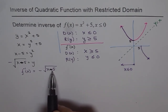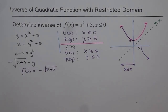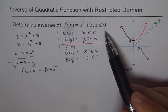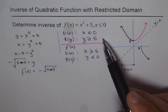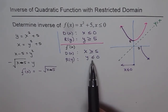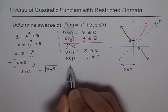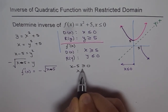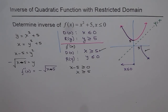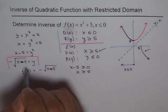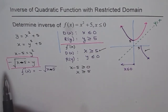We can verify: inside the square root, x - 5 must be ≥ 0, so x ≥ 5, which matches our domain for the inverse. The key takeaway is: when a function has a restricted domain, keep track of domain and range when finding its inverse. If the original domain is x ≤ 0, take the negative square root; if x ≥ 0, take the positive square root; if unrestricted, use ±.